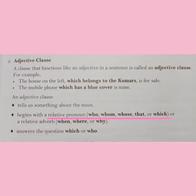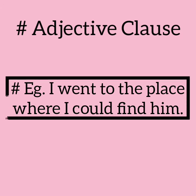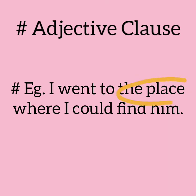An adjective clause begins with a relative pronoun — for example, who, whom, whose, that, or which — or a relative adverb: when, where, or why. For example: 'I went to the place where I could find him.' Here, 'where I could find him' is the adjective clause which modifies or qualifies the noun 'place.'